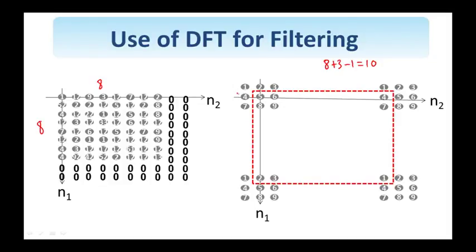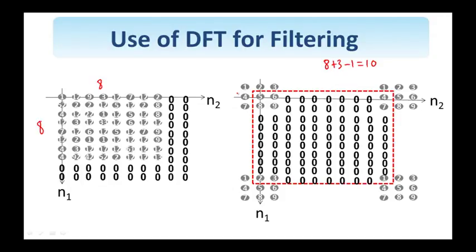So, in order to handle that, I will periodically extend this 3x3 signal with period 10 in both dimensions. And then, I'm going to pull out the base period from 0 to 9 in N1 and 0 to 9 in N2.